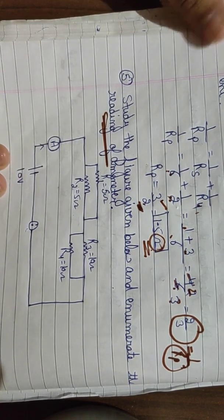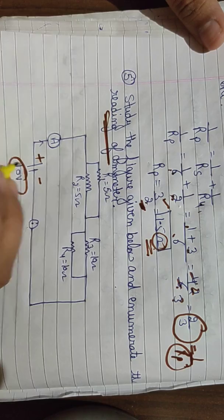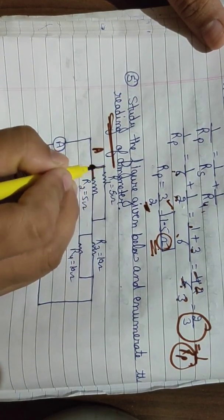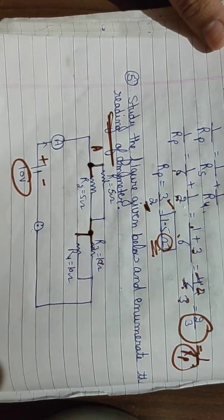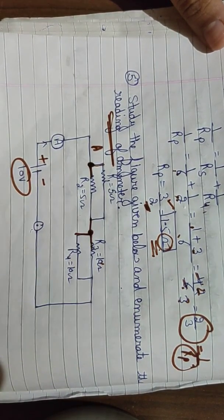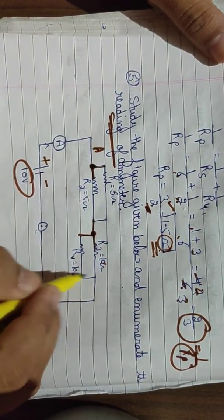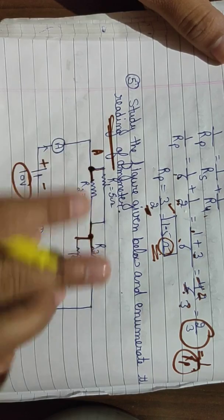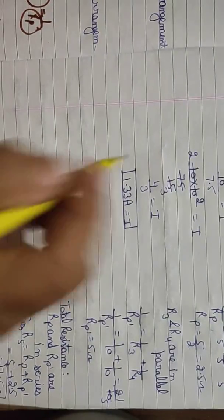Looking at the circuit diagram: battery's positive terminal, negative terminal, potential difference given is 10 volt. Current from the positive terminal passes through the ammeter and reaches point A. From point A, two paths emerge — both are in parallel. Then further, there are again two paths — those two are also in parallel. R1 and R2 should be solved in parallel first, then R3 and R4 in parallel, and after that both equivalent resistors will be in series.